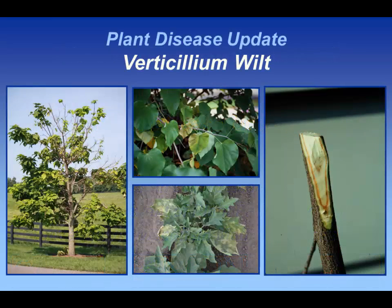In terms of other diseases that we see quite commonly, verticillium wilt is a very common one. I'm going to be talking about Dutch elm disease a little bit later on, and it's kind of related in many ways to this disease. Both of these are vascular wilt diseases, where the pathogen gets into the water-conducting tissue in the plant and blocks it off. The bad thing about verticillium is that it has such a huge host range, as compared to Dutch elm disease, which is pretty much strictly in elms.